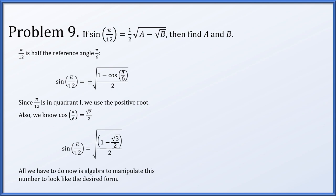All we have to do now is perform some algebra. Representing the 1 in the numerator under the radical as 2 over 2, we get 2 minus root 3 over 2, all over 2, or 2 minus root 3 over 4. We split that up and bring out the root 4 as 1 over 2, giving us 1 half times the square root of 2 minus root 3. In other words, a is 2 and b is 3.